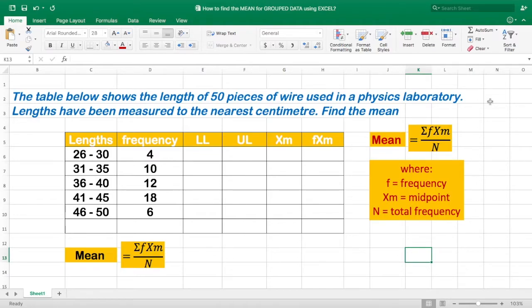Given the table below shows the length of 50 pieces of wire used in physics laboratory, lengths have been measured to the nearest centimeter, find the mean.